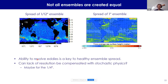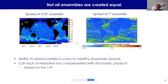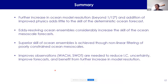Not all ensembles are born the same. The spread of an eddy-resolving ensemble is about 20 centimeters in the boundary currents, while the spread of a one-degree eddy-parameterized ensemble is about one centimeter — an order of magnitude less. Running a quarter-degree model might compensate for this deficit using stochastic physics, but that's an open question. In summary: further increases in ocean model resolution beyond 1/12 degree, and improved physics, add little skill to deterministic ocean forecasts. Eddy-resolving ocean ensembles considerably increase skill, and the superior skill comes through nonlinear filtering of poorly constrained ocean weather scales — similar to results seen in the atmosphere.